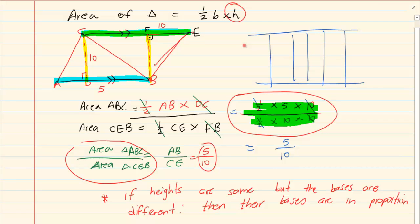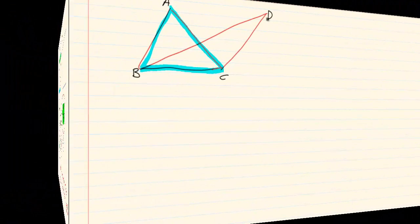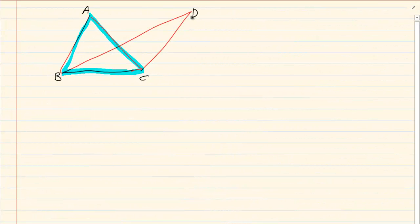So what is our conclusion? If the heights are the same but the bases are different, then their bases are in proportion. Now let's look at another example. If you look at triangle ABC and triangle BCD, they have the same base — their base is BC.